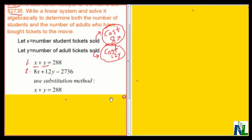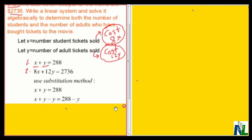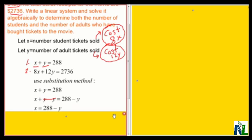Equation 1 is X plus Y equals 288. I'm going to solve for X — I want to get X by itself on the left-hand side. To do that, I'm going to subtract Y from both sides. Y minus Y is 0, so on the left-hand side I'll have X, and on the right-hand side I'll have 288 minus Y. So X equals 288 minus Y.